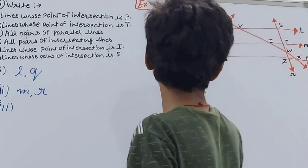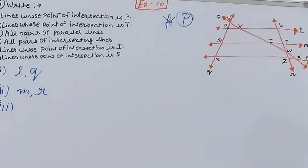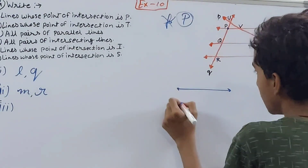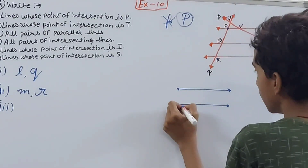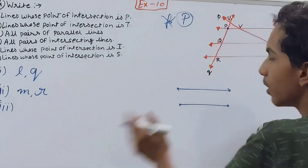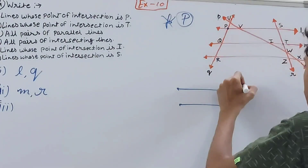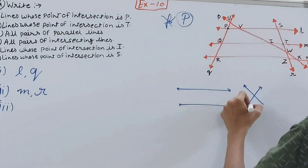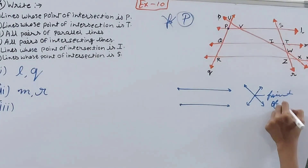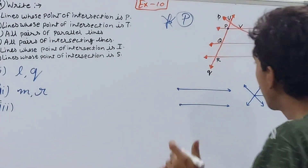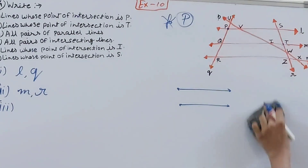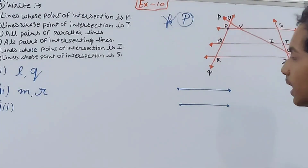For part three, we need all pairs of parallel lines. Parallel lines are lines that never meet — when you extend them in any direction they will not intersect. Intersecting lines, by contrast, cross each other at a point of intersection. We need to find all pairs matching the parallel pattern.